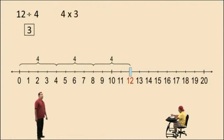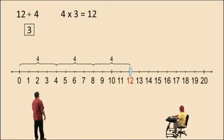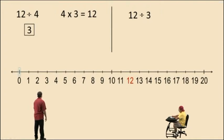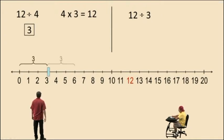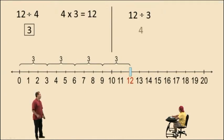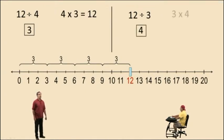And you can check your answer by saying that makes sense, because 4 times 3 is 12. Let's take a look at this one: 12 divided by 3. How many 3's go into 12? Well, here's one 3, here's 2 3's, here's 3 3's, and here's 4 3's. So 4 whole 3's go into 12. So 12 divided by 3 is 4. That makes sense because 3 times 4 is 12.